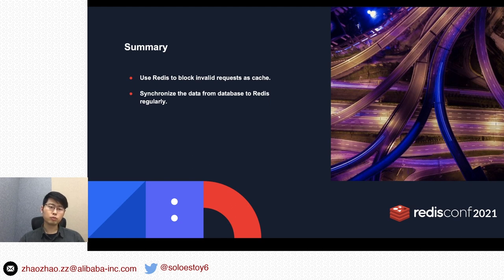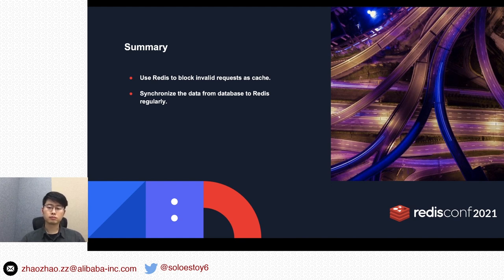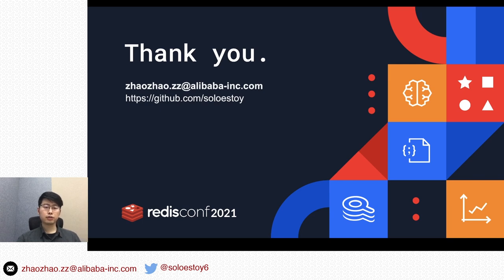In summary, two points: first, use Redis as a cache in front of the database to block invalid requests, which helps reduce database traffic. Second, don't forget to sync data from the database to Redis regularly — that's very important. That's all. Thank you. If you have any questions or suggestions, you can email me. Here is my email address and my GitHub. Hope my presentation could help you.